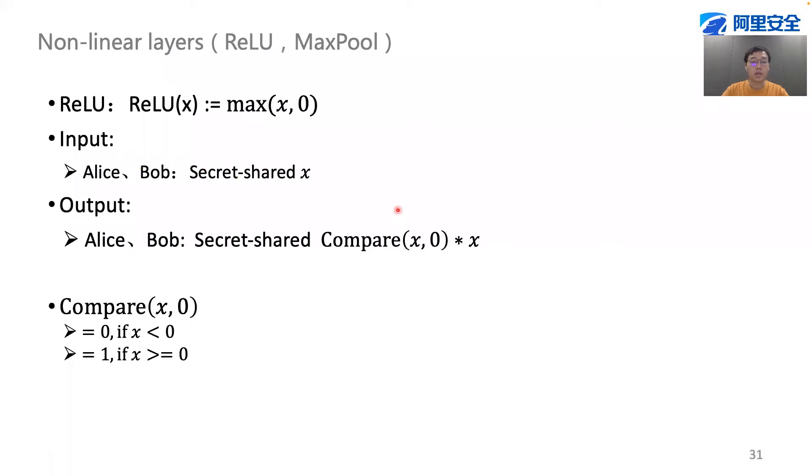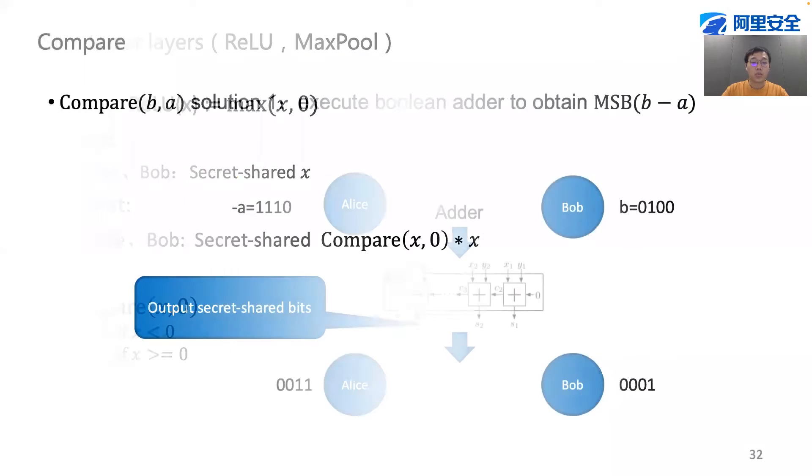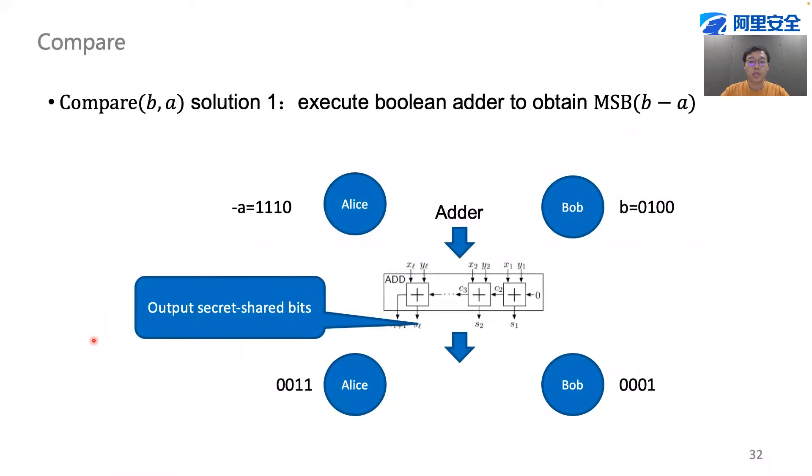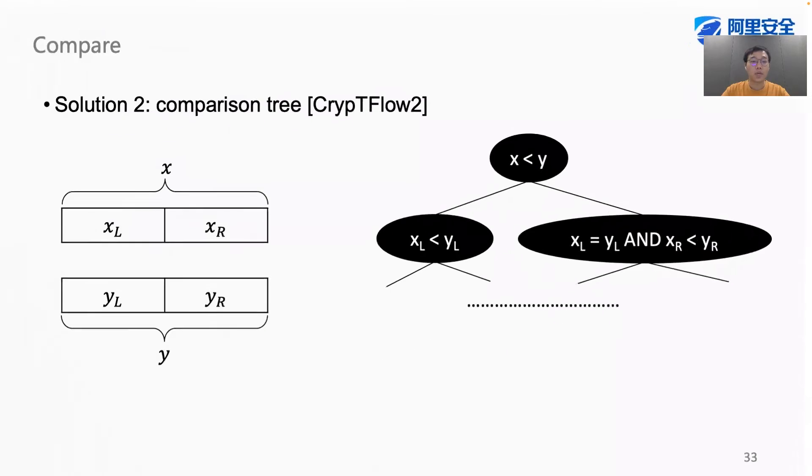A fundamental building block in the nonlinear layers is the comparison operation. One solution for comparison is to use a boolean adder between the two parties, and then we just take out the MSB of the addition result.